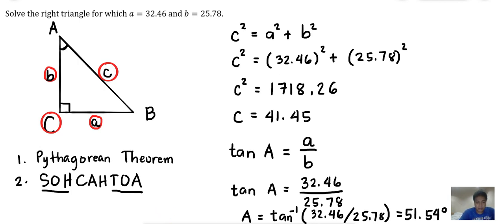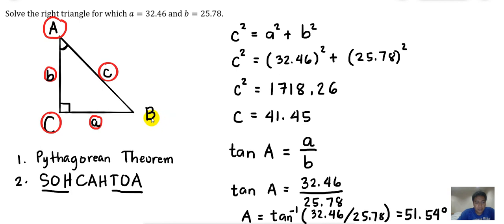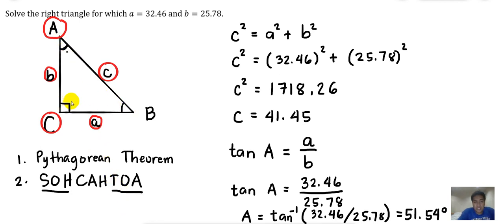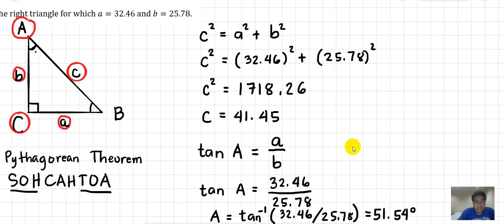We have now solved for angle A, which is 51.54 degrees. The last unknown is angle B. There are many ways to solve for B. One way is to use the fact that the sum of the interior angles of a triangle equals 180 degrees — this is true for all types of triangles.